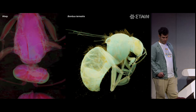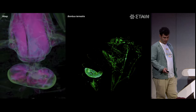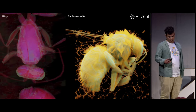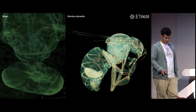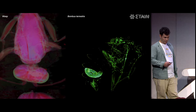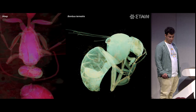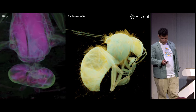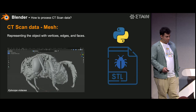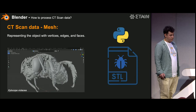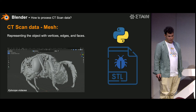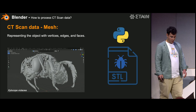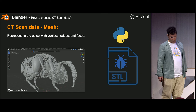Here are some other animations. You can see how the denser parts stay in the image while the lower-density parts are filtered out. To make the simulations we need mesh data, because the simulation software requires STL files.